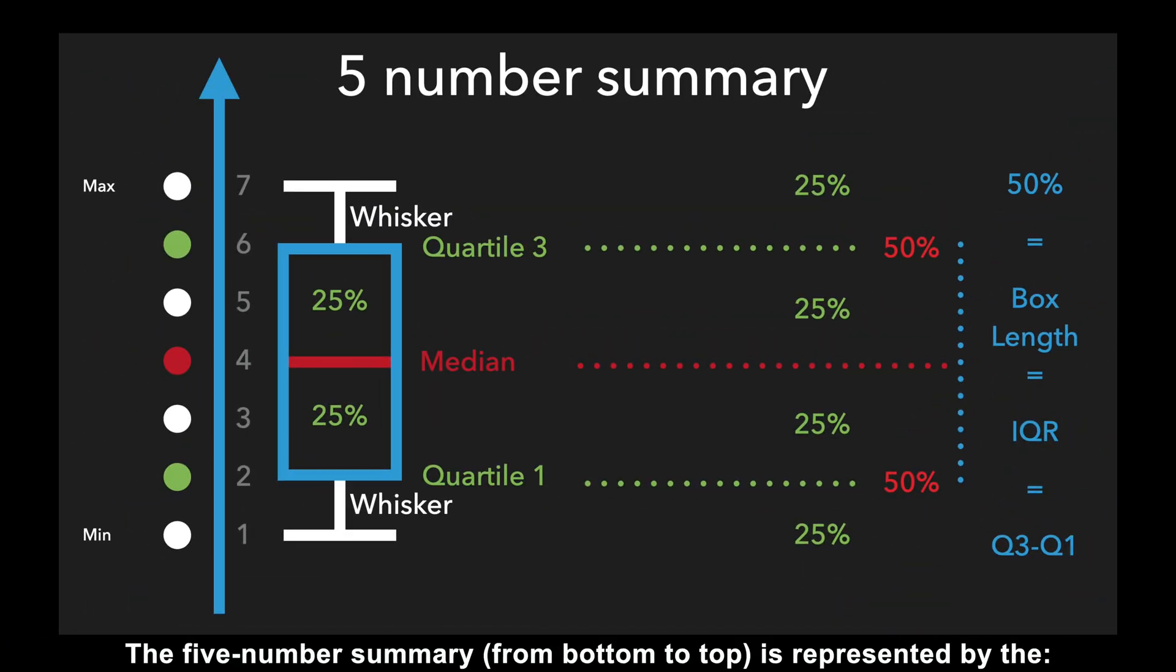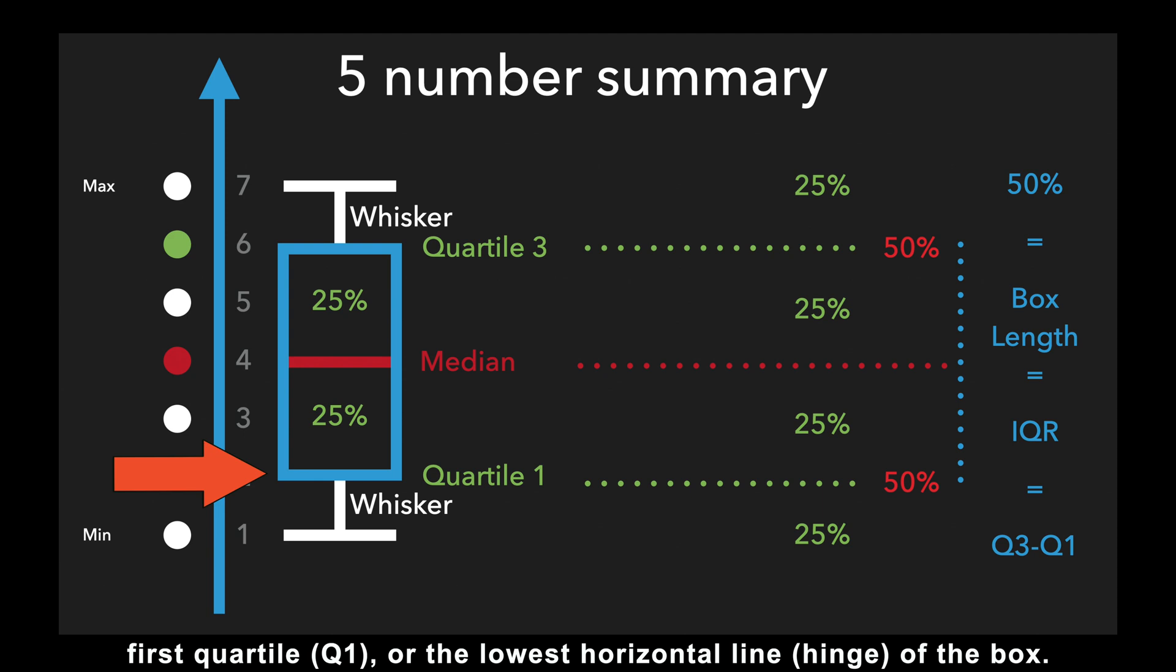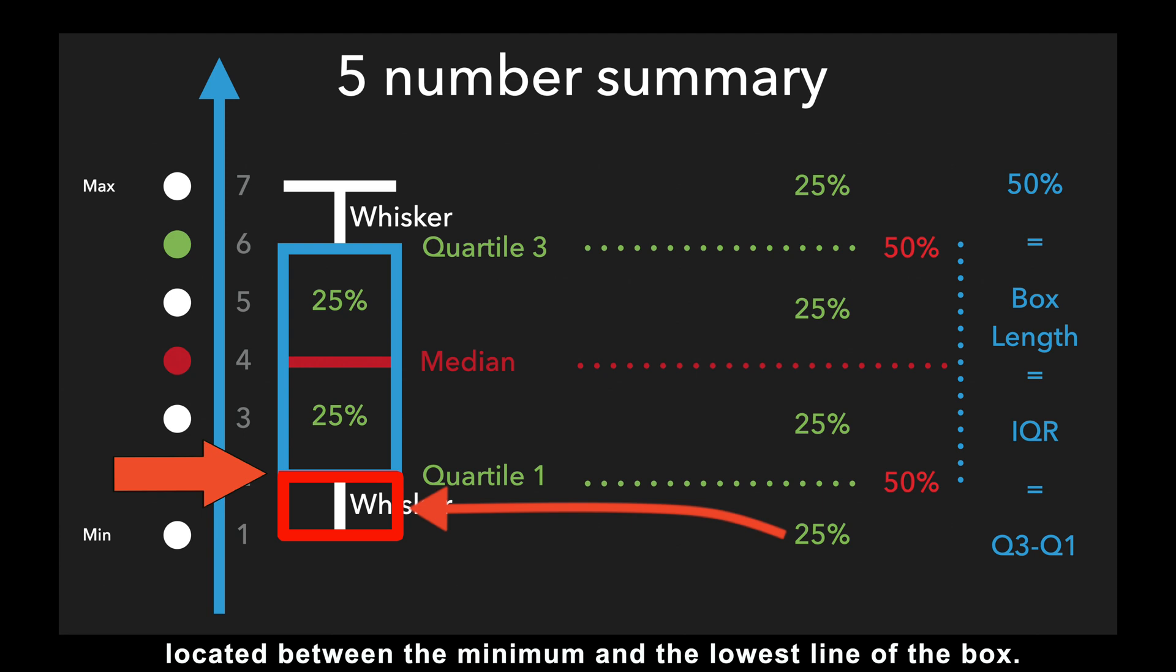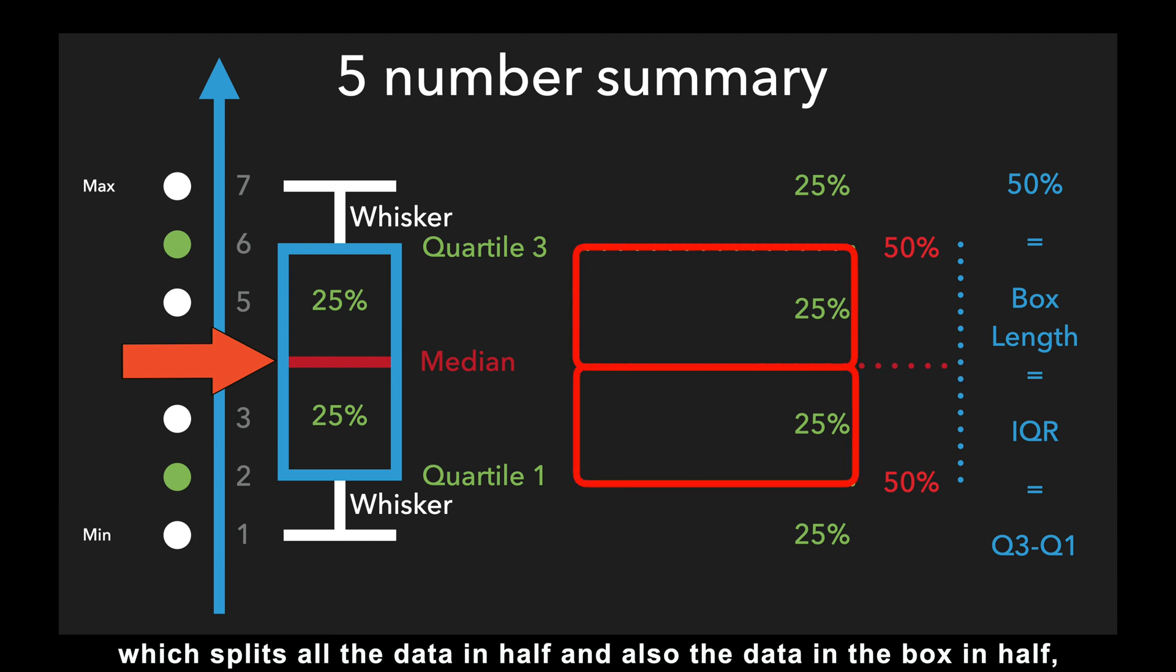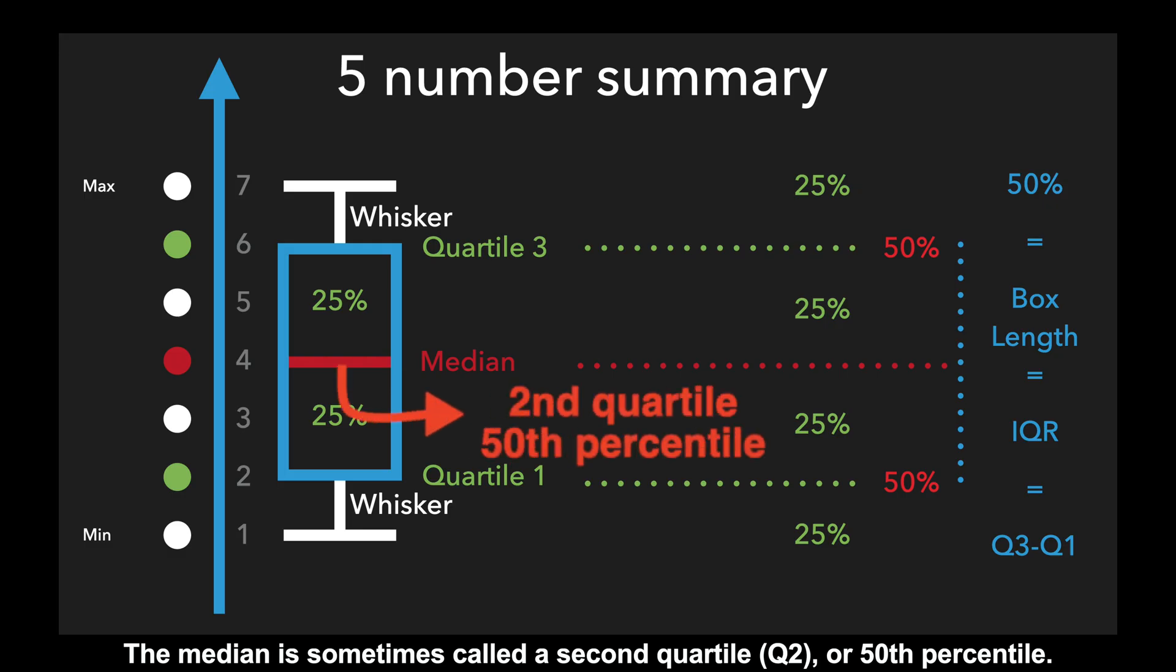The five-number summary from bottom to top is represented by the minimum wage, which is the end of the lowest whisker, first quartile, or the lowest horizontal line of the box. It's also called 25th percentile because 25% of all the data is located between the minimum and the lowest line of the box. Median is the thick horizontal line in the middle of the box, which splits all the data in half, and also the data inside of the box in half, so that both sub-boxes have 25% of the data even if they look completely uneven. The median is sometimes called as second quartile or 50th percentile.